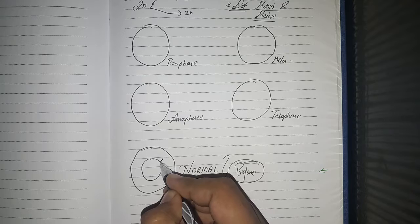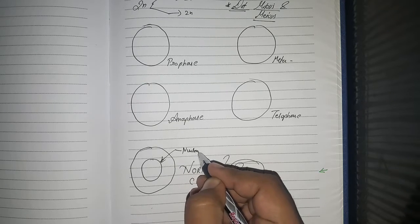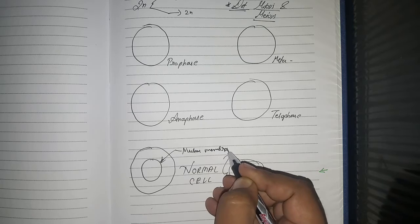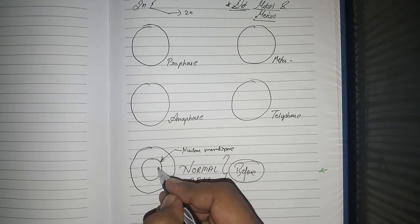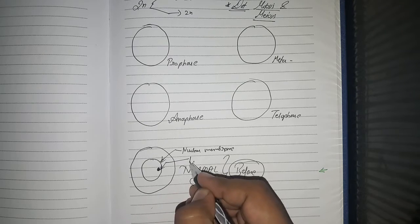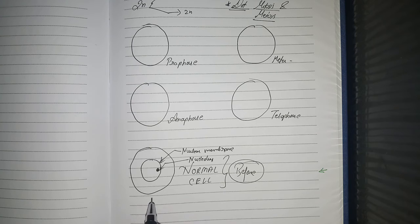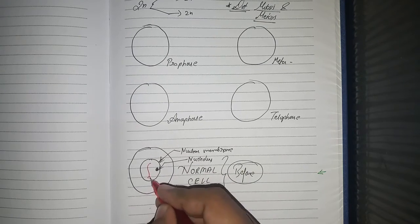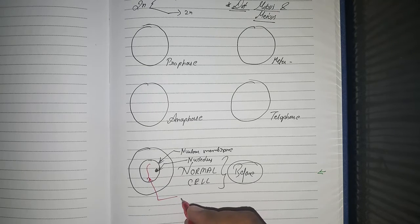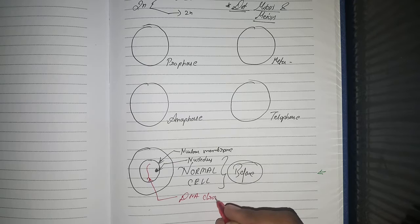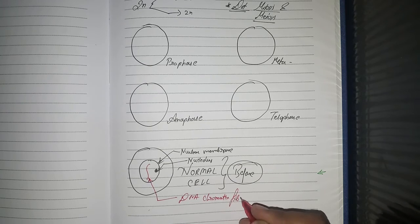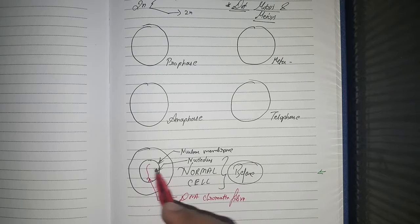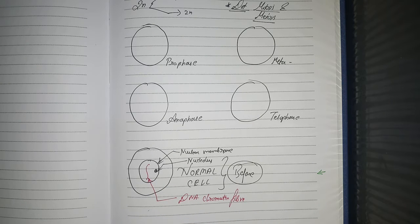In the normal cell, we have the nuclear membrane, the nucleolus, and the chromatin fiber — which is DNA. There are many chromatin fibers but for representation purposes I'm drawing one. This is the normal cell.